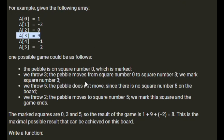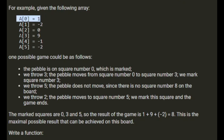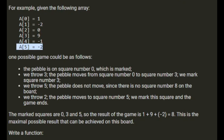We throw five, the pebble does not move since we cannot move to eight. We throw two, the pebble moves to square number five. We mark this square and the game ends. The marked squares are zero with a value of one, three with a value of nine, and five with a value of minus two. So the result of the game is one plus nine minus two, which is eight.